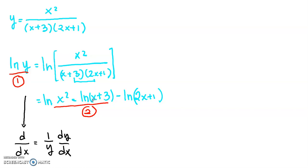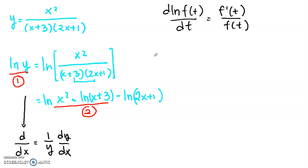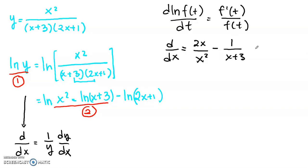For the right side, remember from the logarithmic derivative rule that d/dt of ln(f(t)) is f′(t) divided by f(t). So differentiating with respect to x, we get 2x over x-squared for the first term, minus 1 over (x+3), minus 2 over (2x+1).